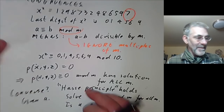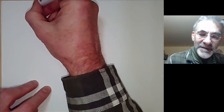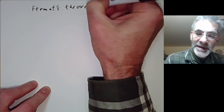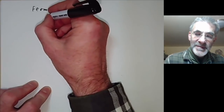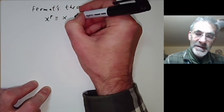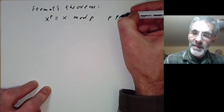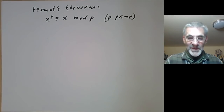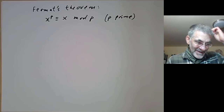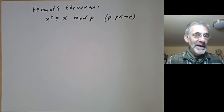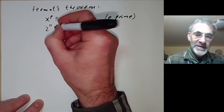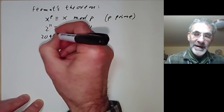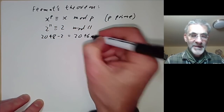A very famous result about congruences is Fermat's little theorem, which has nothing to do with Fermat's Last Theorem. It says x to the p is congruent to x mod p when p is prime. This is an absolutely fundamental theorem of number theory. For example, 2 to the 11 is congruent to 2 modulo 11 — that is, 2048 minus 2 equals 2046, which is divisible by 11.